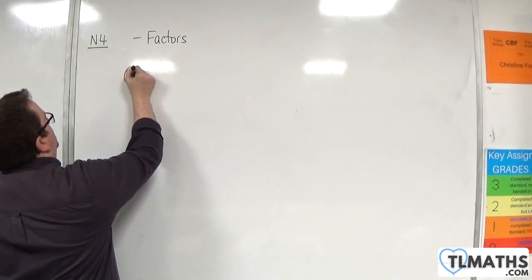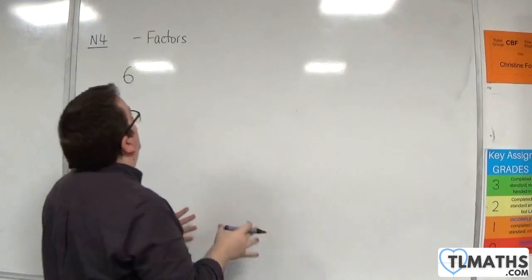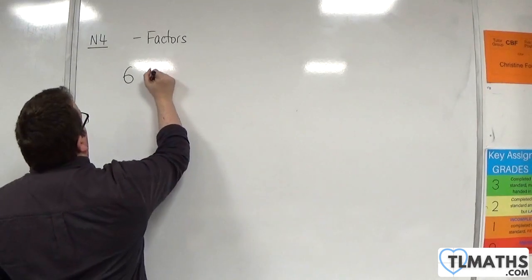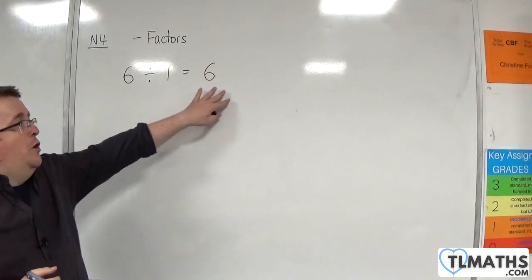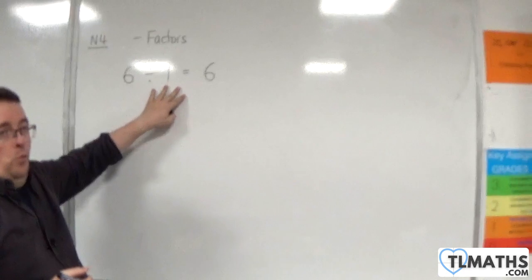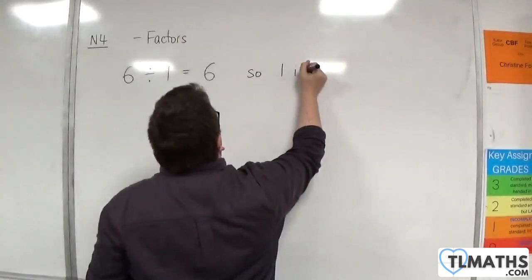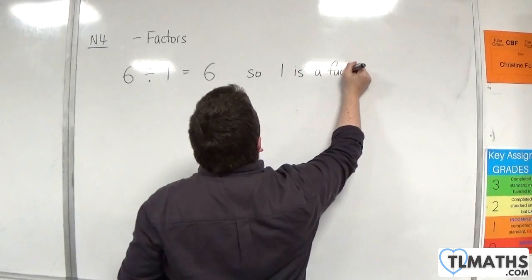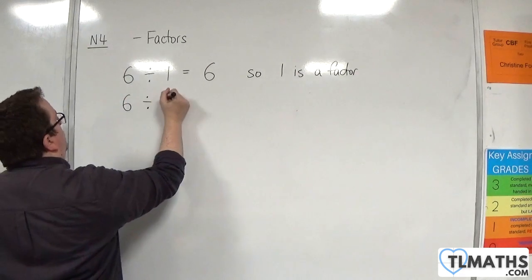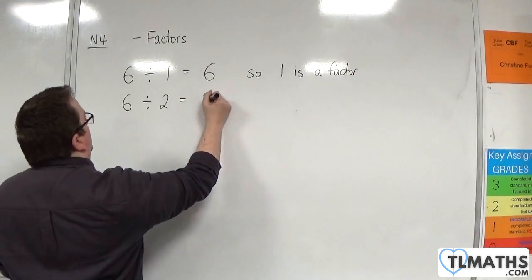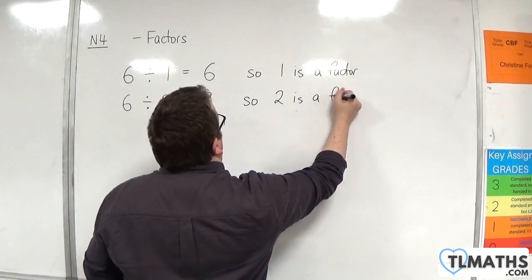You might tackle this by a brute force method. What I could do is look at 6 divided by 1, which of course is 6. Because there is no remainder there, that means 1 is a factor. If we did 6 divided by 2, we get 3. So 2 is a factor.